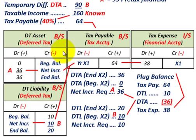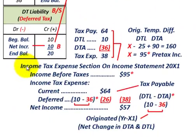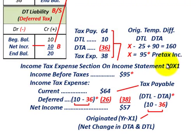So we've taken care of our recording. Now let's look at how we'd report this on our income statement for the year. This is how we put our income tax expense section on the income statement, based on what we calculated for our deferred tax liability, deferred tax asset, and tax payable.